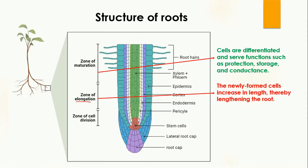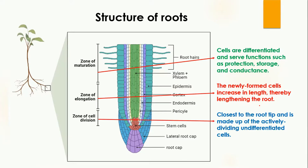The second zone is the zone of elongation. As the name indicates, elongation means it is going to increase in length. This zone contains newly formed cells that increase in length, and because of this increase in length, the overall length of the root increases.